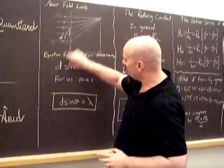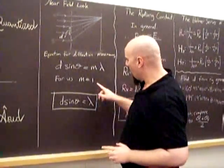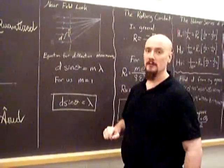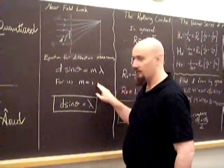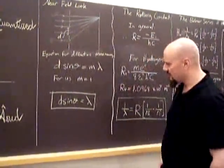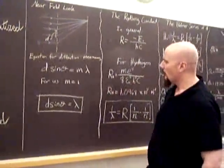Where D is the distance between the slits. And we're only going to be interested today in the first order, not the second order, so M will be one for us all day, leaving us this equation: D times theta equals lambda.